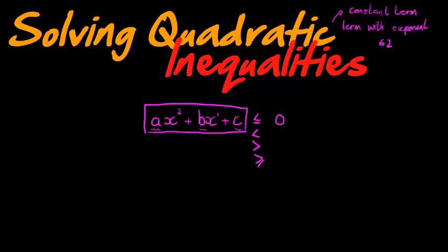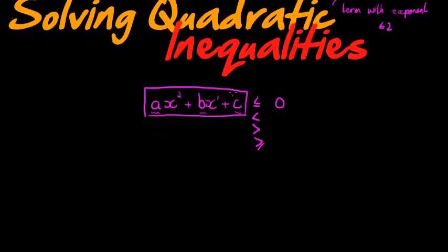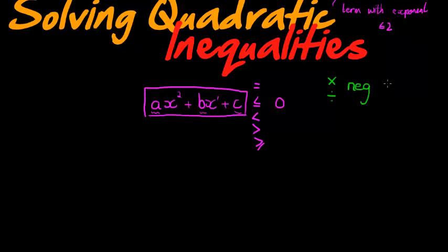You're already very familiar with this from quadratic equations — the only difference is we have an equal sign equal to zero. Now with linear inequalities, we did exactly the same as with linear equations; the only difference was that when we multiplied or divided by a negative number, we swapped the inequality sign around.